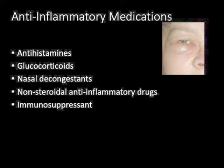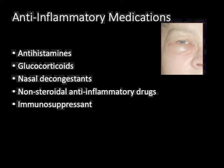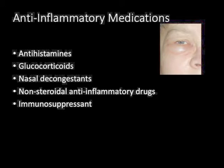We will review antihistamines, which block the allergic response, and nasal decongestants, which vasoconstrict the vessels in the nose, causing the mucous membranes to shrink. We have reviewed the glucocorticoids several times — your number one drugs. Fluticasone, or Flovent, can be given intranasally for allergic rhinitis. Hydrocortisone can be given topically, prednisone is given orally, or Solu-Medrol may be given IV in severe cases. Remember, these medications are anti-inflammatory.